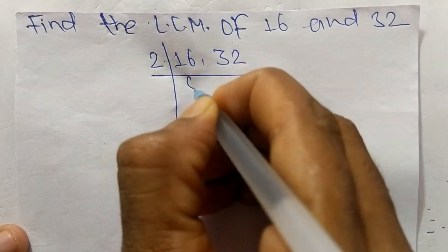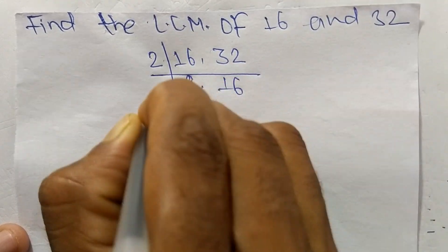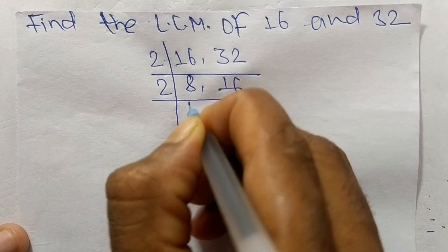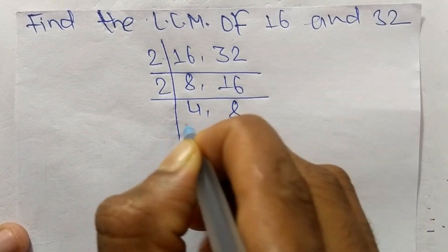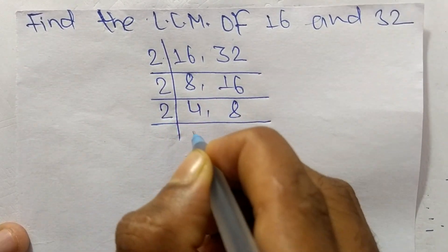2 times 8 means 16, 2 times 16 means 32. Again it is divisible by 2, so 2 times 4 means 8, 2 times 8 means 16. Again it is divisible by 2.